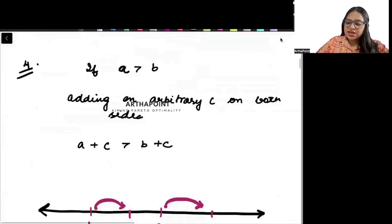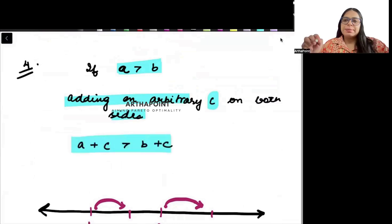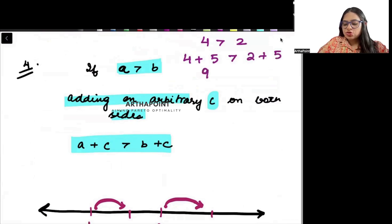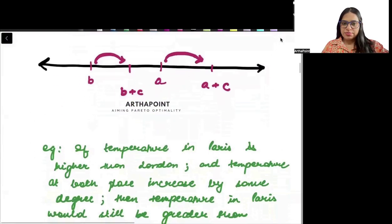Suppose I tell you a is greater than b, and I add a positive number c on both sides. Then a plus c will also be greater than b plus c. For example, if 4 is greater than 2 and I add 5 on both sides, then 9 is greater than 7 — which is still true.